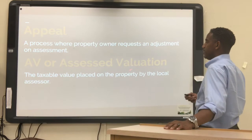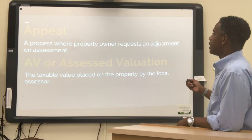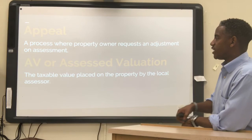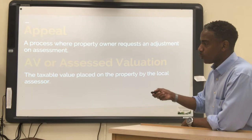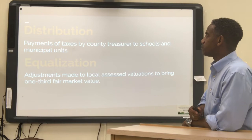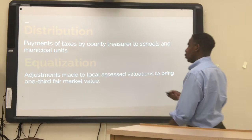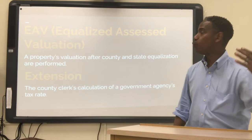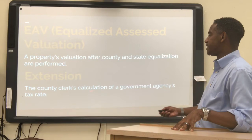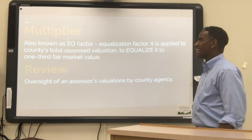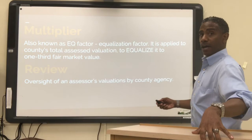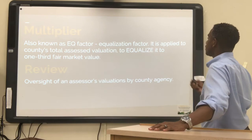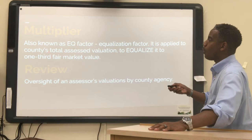Key terms: Appeal — a process where a property owner requests an adjustment to an assessment. AV or assessed valuation — the taxable value placed on property by the local assessor. Distribution — payments of taxes by county to schools. Equalization — adjustments made to local assessed valuations to bring them to one-third fair market value. Equalized assessed valuation — a property's valuation after county and state equalizations are performed. The extension — money raised through the tax rate by calculation. The multiplier, also known as the EQ factor or equalization factor — applied to a county's total assessed valuation to equalize it to one-third fair market value.